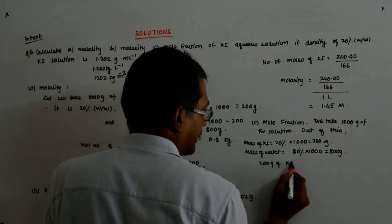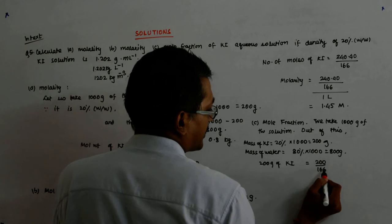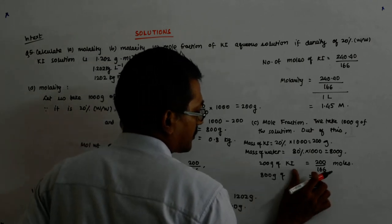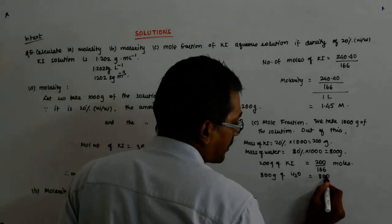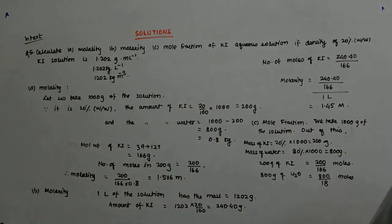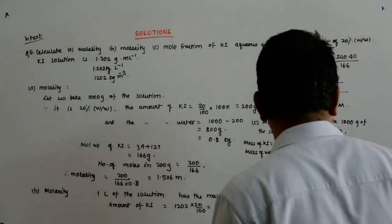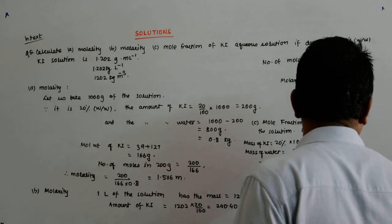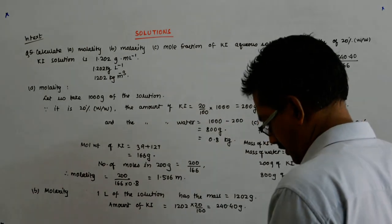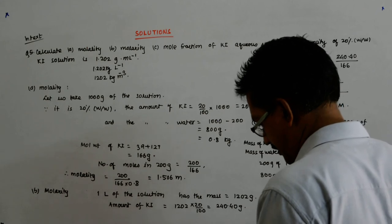Mass of KI is 200 grams. Mass of the water is 800 grams. 200 grams of KI is equal to 200 upon 166 moles. And 800 grams of H2O, that is equal to 800 upon 18 moles. 200 divided by 166 is equal to 1.205, and this is equal to 44.44.